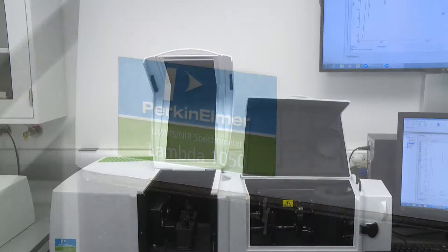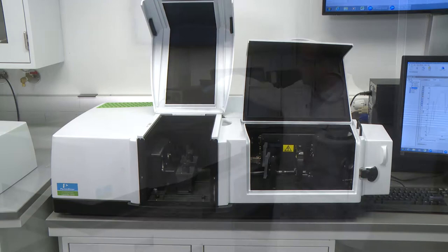Today we're going to be talking about our Lambda 1050 UV-VIS-NIR instrument. These are scanning photometers that are capable of scanning between 175 and 3300 nanometers.